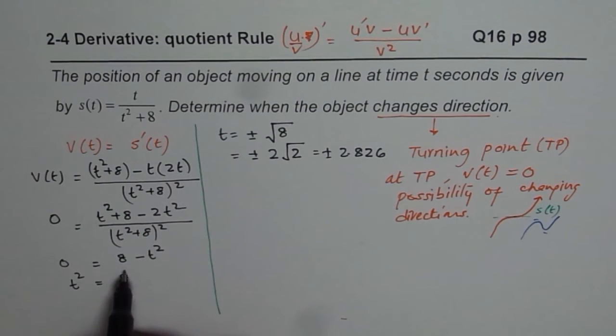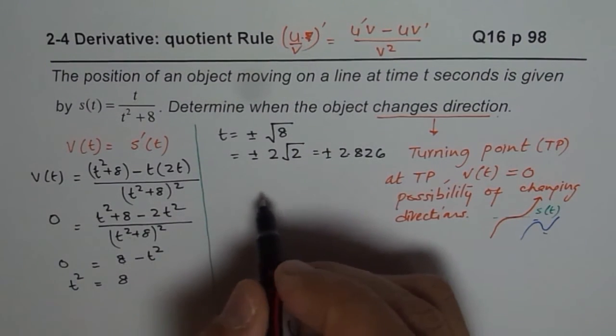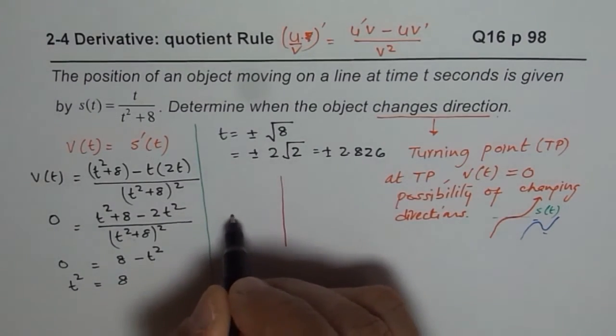If you sketch this, v(t) equals to 8 minus, because the denominator is positive, the numerator is going to be 0 at 2 square root 2. And if I sketch this, let me sketch it here.